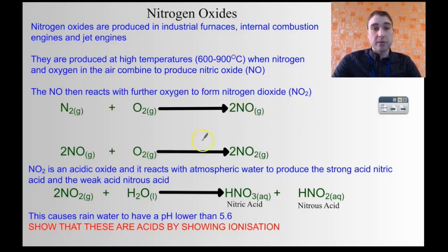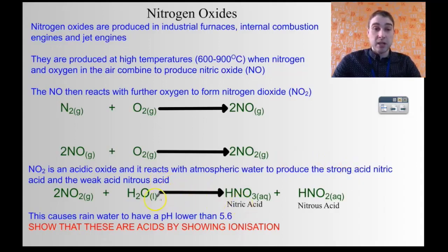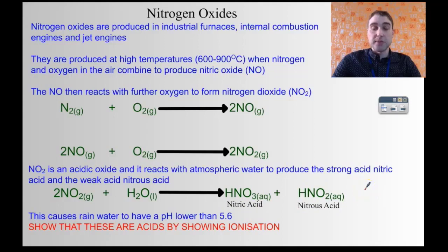That nitric oxide then further reacts with oxygen to produce nitrogen dioxide. Nitrogen dioxide is an acidic oxide, and it reacts with water in the atmosphere to produce nitric acid and nitrous acid. Because we've got a weak acid and a strong acid dissolved in the rainwater, that lowers the pH and makes it acidic. It's very important if you're using these equations to show the ionization and the production of hydronium ions.